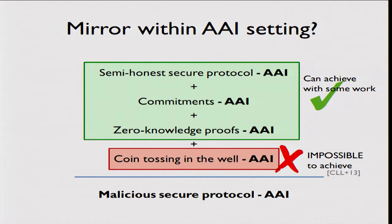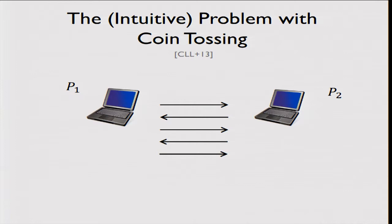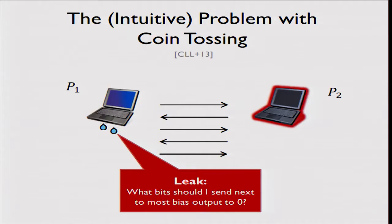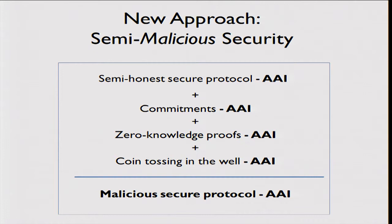We run into a very solid wall: it turns out it is impossible to achieve the property needed from coin tossing in this setting. The purpose of coin tossing is to enforce that adversaries use good randomness instead of maliciously chosen randomness. The intuitive reason this is a problem: no matter what protocol you use for coin tossing, there will exist some round where a corrupted party can leak the following function on the secret state of the other party — specifically, what bit should I send next in order to bias the outcome as much as possible?